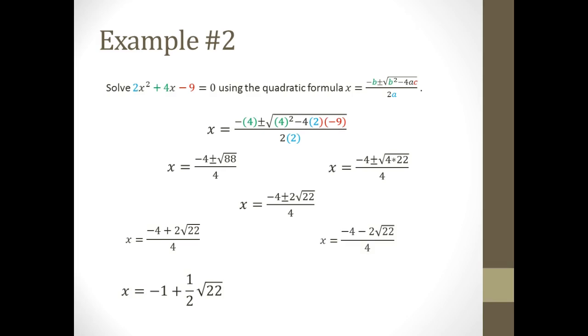On my negative case, I'm also going to split it up. Negative 4 divided by 4 is negative 1, and negative 2 divided by 4 is negative 1 half. So here's my other solution. These are the solutions to 2x squared plus 4x minus 9 equals 0.